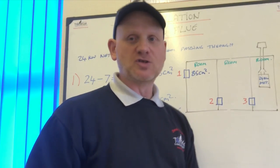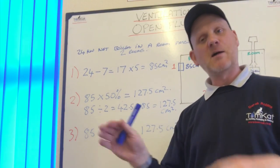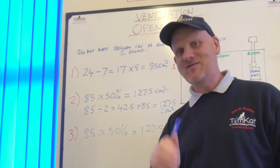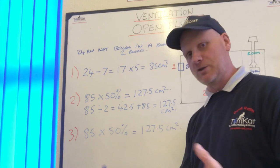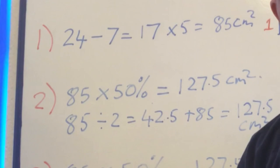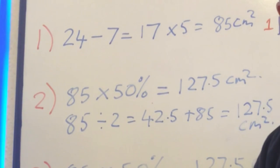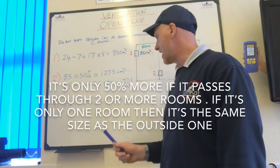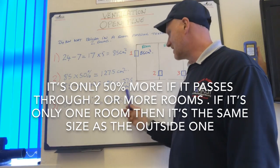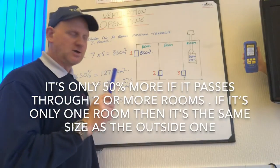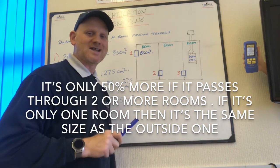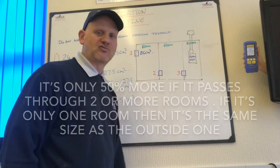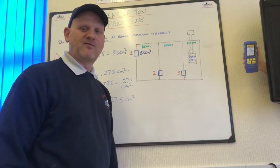Vents two and three are sized differently because they pass through one room to another — they need to be 50% larger than vent one. So 85 divided by 2 is 42.5; 42.5 plus 85 gives a total of 127.5 centimetres squared for both vents two and three — they're the same figure. The reason we make them 50% larger is because the air could become stagnant or be blocked by furniture, but still needs to pass through to the boiler room.